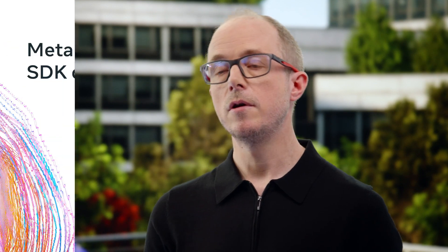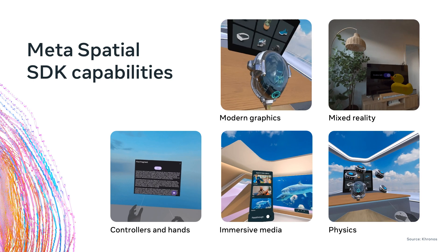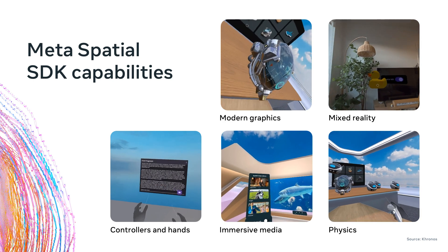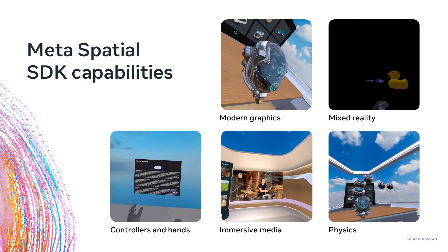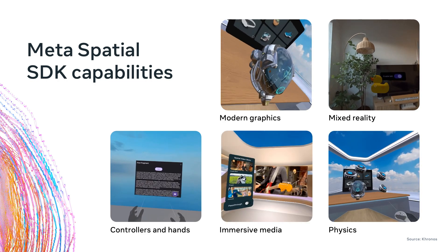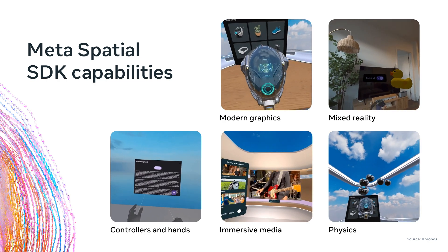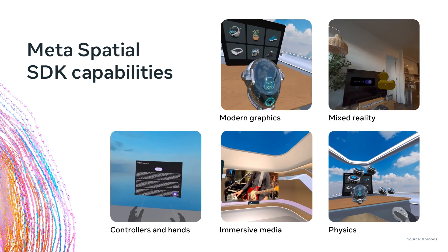We already touched on 2D UI, modern graphics, and mixed reality features. In addition to those core capabilities, Meta Spatial SDK supports physics, stereo, spatial audio, performance panels, and inputs including controllers, hands, and keyboard. By building those capabilities into the core of the SDK, we are looking to simplify the work of the developer to create a spatial experience.